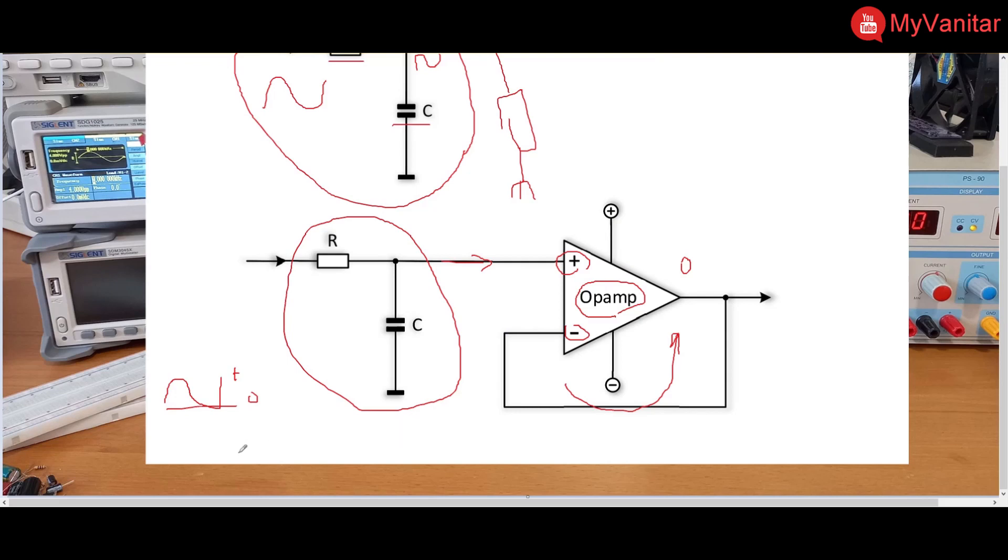Or if your signal starts from a negative value or something negative to positive, then you should provide the negative rail to the op-amp or use a dual supply op-amp.